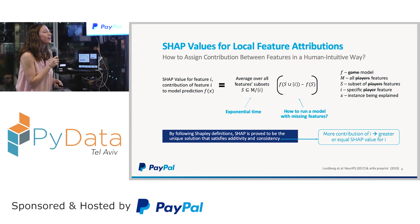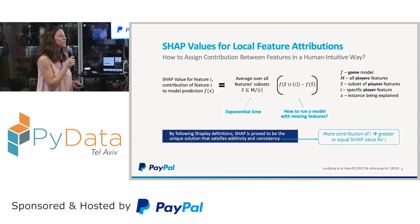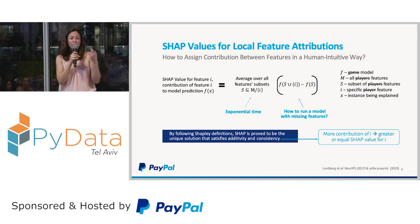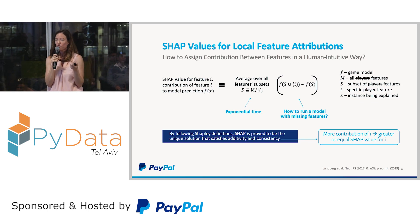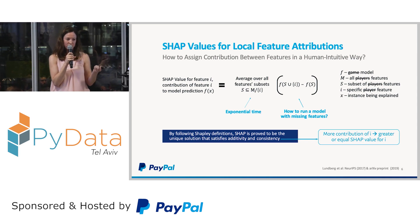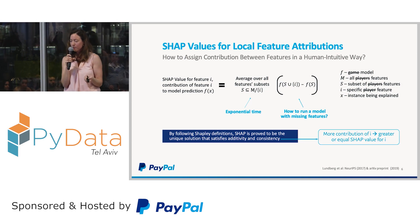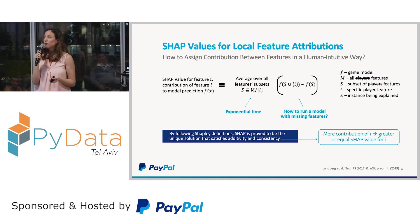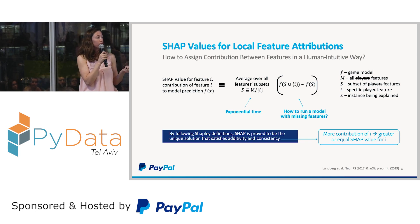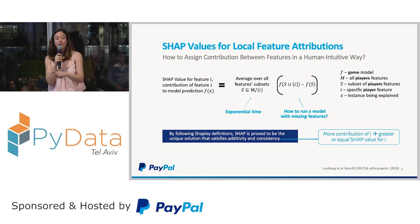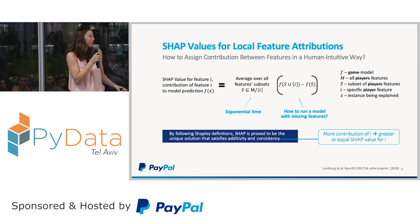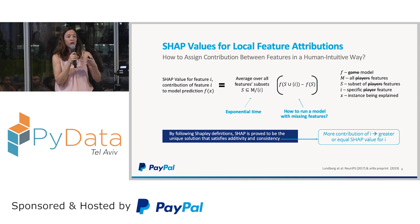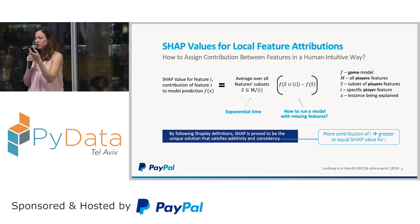There are two main challenges. First, counting every possible subset of features is exponential time — not practical with a large number of features. Second — and this is the key question — you should run a model with missing features, not null, but truly missing features. How do you run a model when part of the input is missing? That is a big problem. We need SHAP algorithms to solve it. The most naive way would be to train a different model for every subset of features — exponential and not practical, and it doesn't explain your production model anyway.